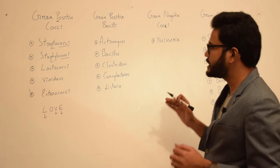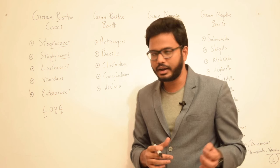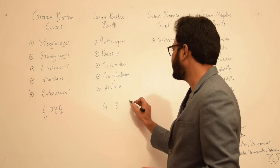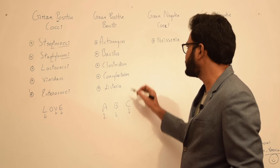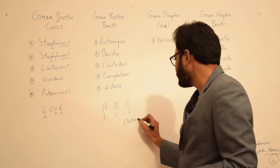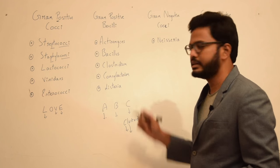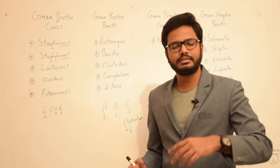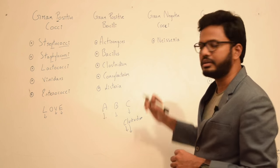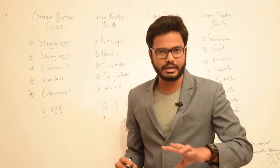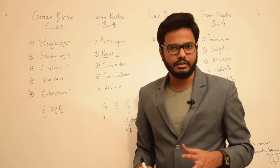Moving on to gram positive bacilli — whenever starting an activity with positiveness, we start from the beginning. Write down A, B, C: A stands for actinomyces, B stands for bacillus, C stands for clostridium. Then C further stands for corynebacterium and L stands for listeria. You won't confuse these with cocci because 'bacillus' is present here, so the rest of the organisms also come under bacilli.